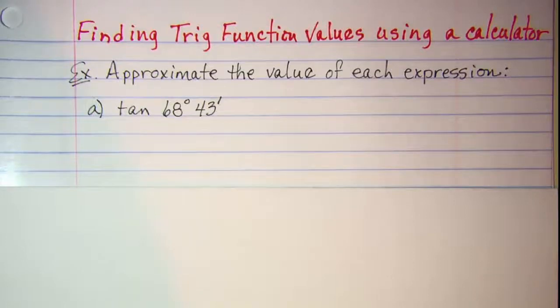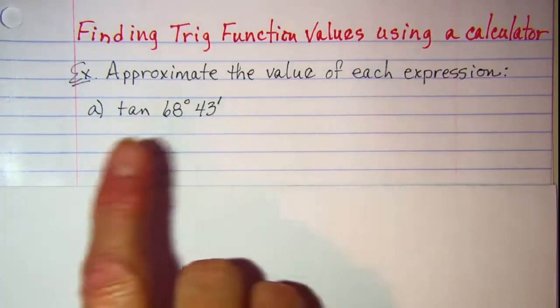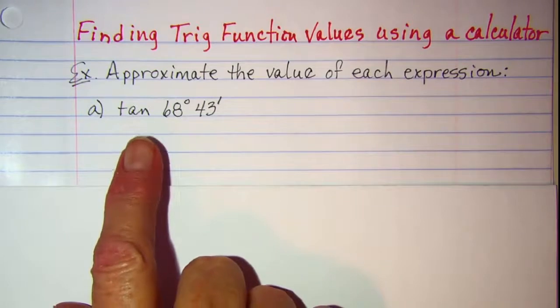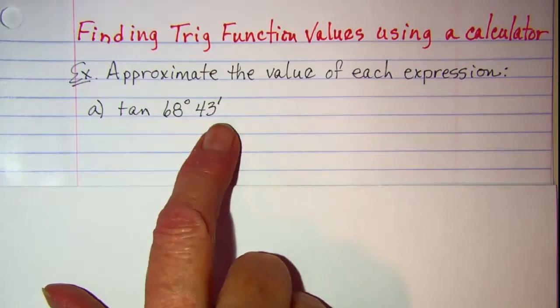In this video, we'll be looking at how to find trig function values using a calculator. Our directions tell us to approximate the value of each expression, and our first example is tangent of 68 degrees, 43 minutes.